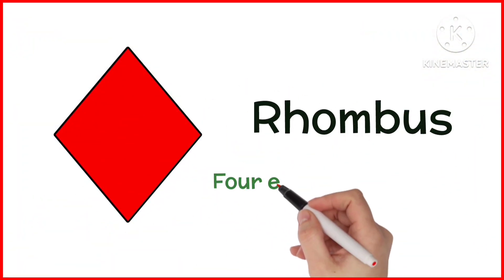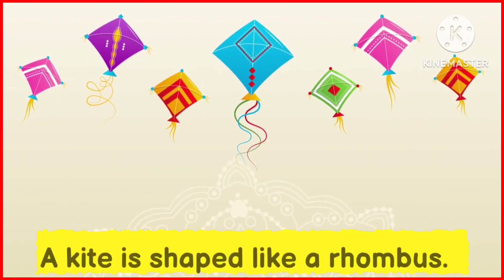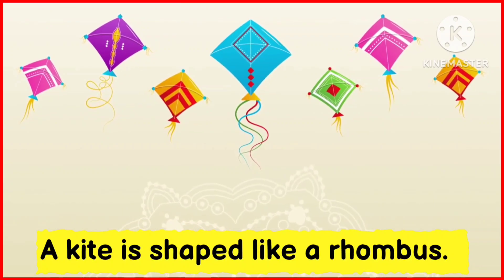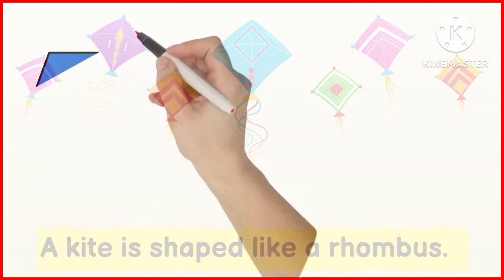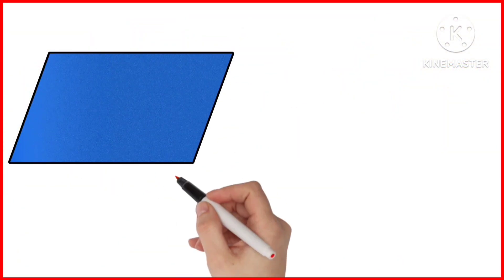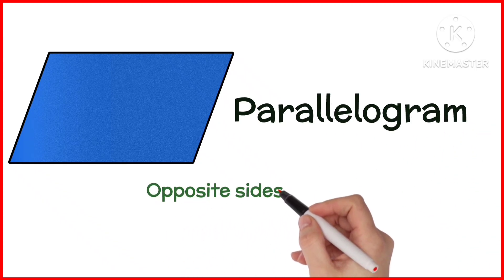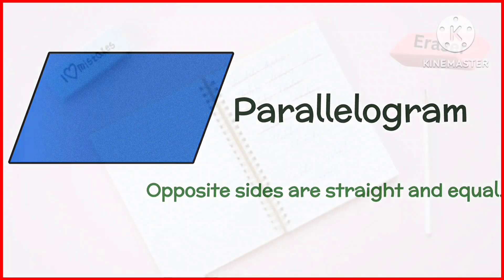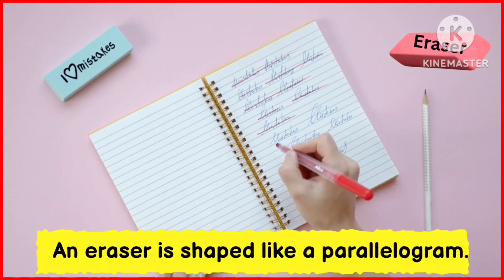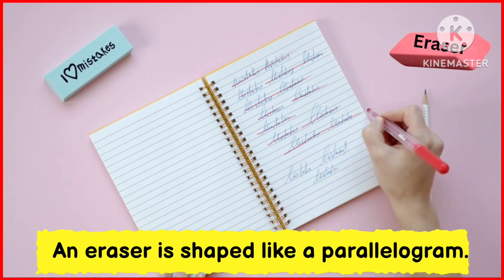Rhombus. Rhombus has four equal slanted sides. A kite is shaped like a rhombus. Parallelogram. Opposite sides are straight and equal. An eraser is shaped like a parallelogram.